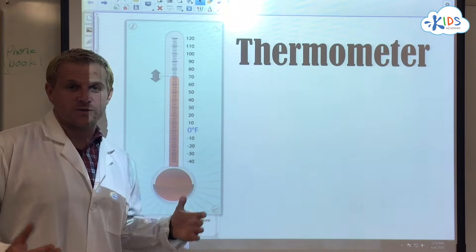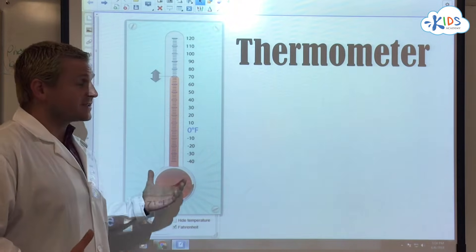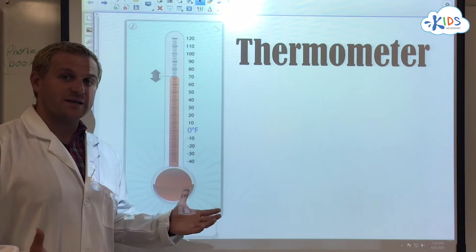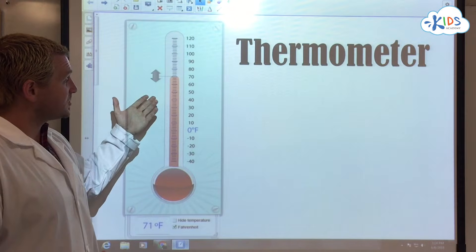Or you might go out and go, wow, it's really hot. Now, when you're a scientist, you want to be more specific. You don't want to just say something is hot or something is cold. You want to say how hot or cold it is. So you can use a thermometer like this one.